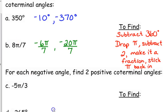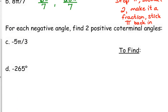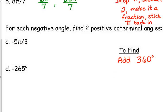Now let's look at finding positive co-terminal angles. If we got negative ones from subtracting, then we're going to get positive ones from adding. So we're either going to add 360 degrees if it's in degrees, or we're going to drop the π, add 2, turn it into a fraction, and put π back in there.